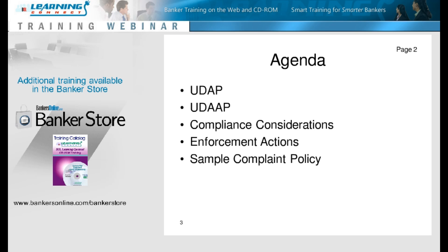UDAP violations also resulted in unsatisfactory CRA ratings, downgraded consumer compliance ratings, as well as restitution to consumers and civil money penalties. Through enforcement actions we see some of these refunds and civil money penalties required, but you don't always hear about other effects a UDAP penalty may have had, such as downgrading a CRA rating — which can, in some senses, be significant.